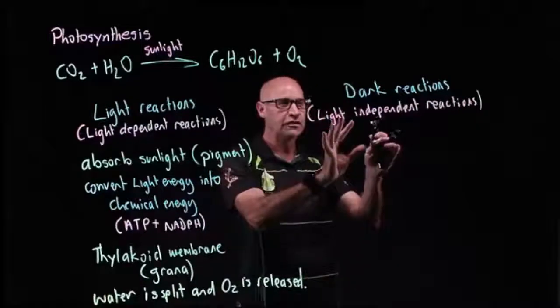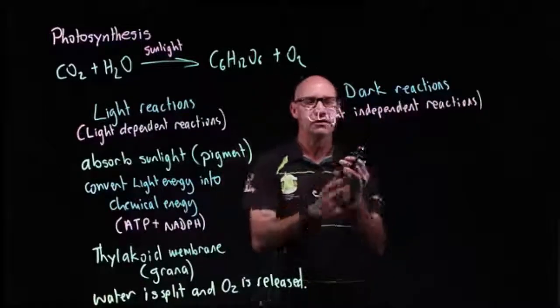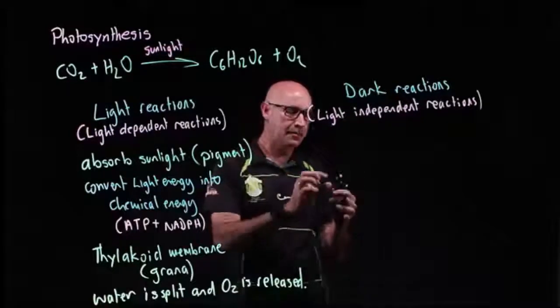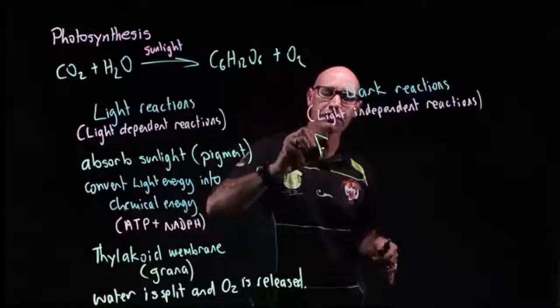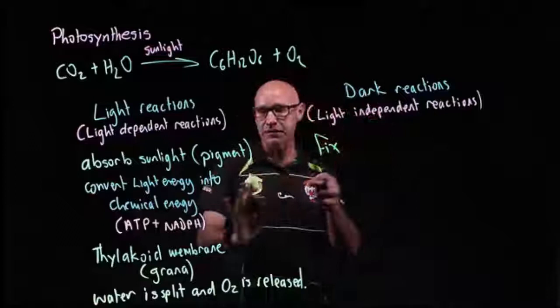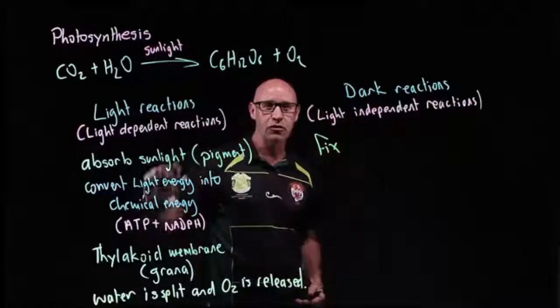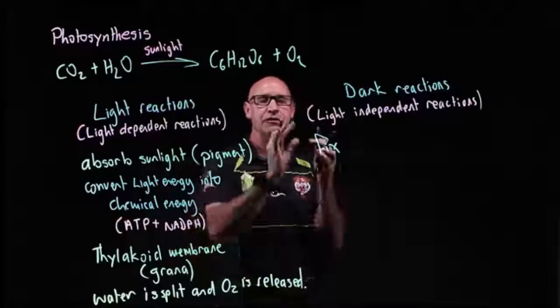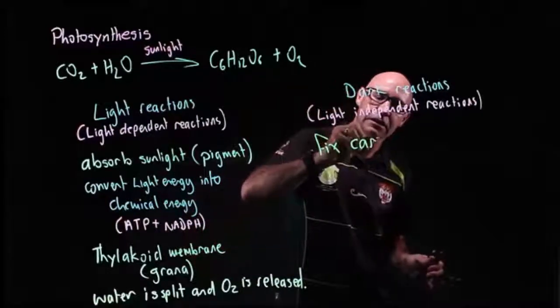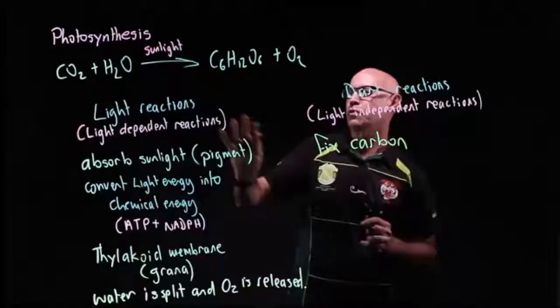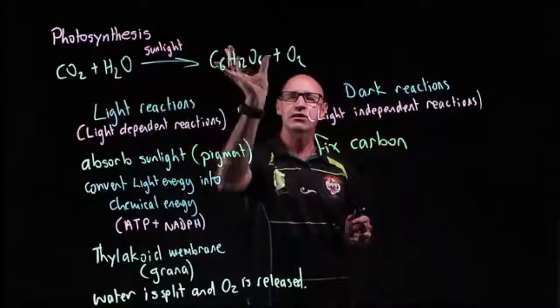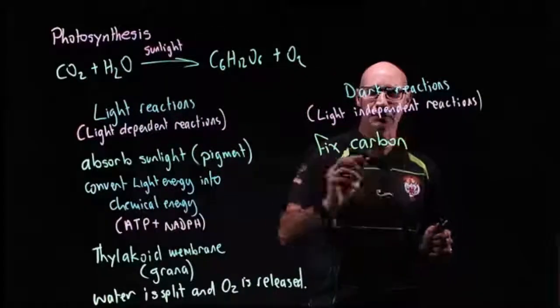Now, the whole process of the dark reactions is to fix carbon. The purpose is to use the energy from the light reactions to turn this process called the Calvin cycle to fix carbon. We take CO2 and we make glucose.